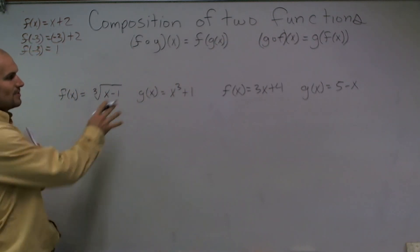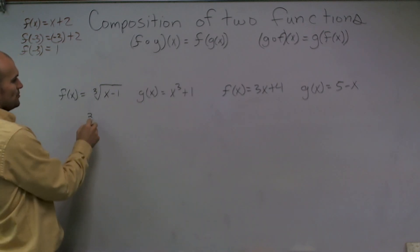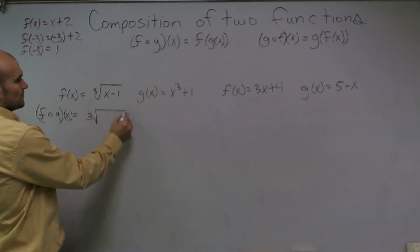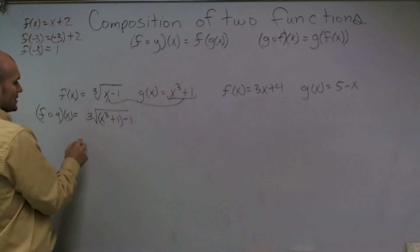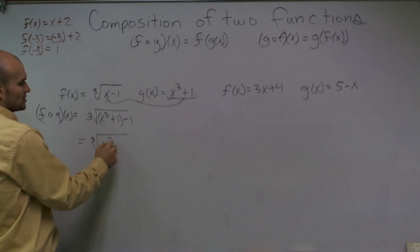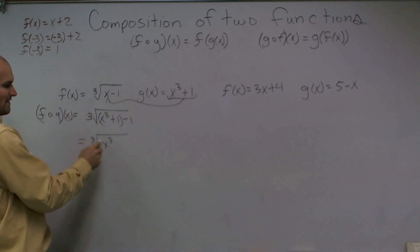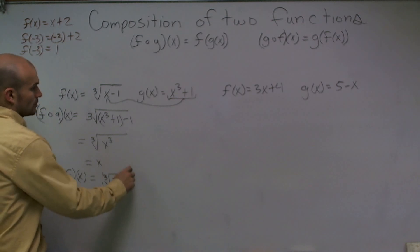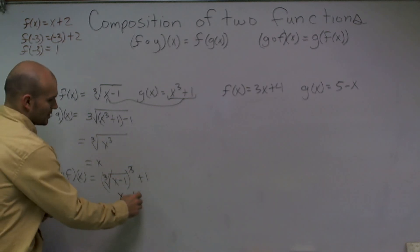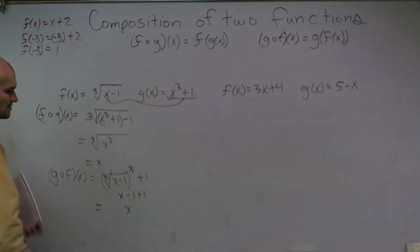So what I'm going to do for this one is I'm going to plug it in for my other function. Let's do f of g of x. So I plug it in, I have the cube root. Instead of x, I'm going to have x³ plus 1, equals the cube root of x³, and that cancels out. The cube root of x³ equals x. When I do my g of f of x, I take the cube root of x minus 1 cubed plus 1. The cube root of n cubed is going to leave you that. x minus 1 plus 1 leaves you x. So my answer equals x for both terms. Interesting.